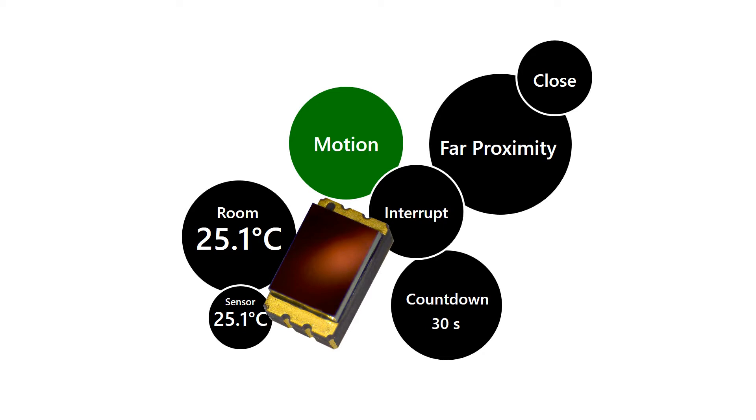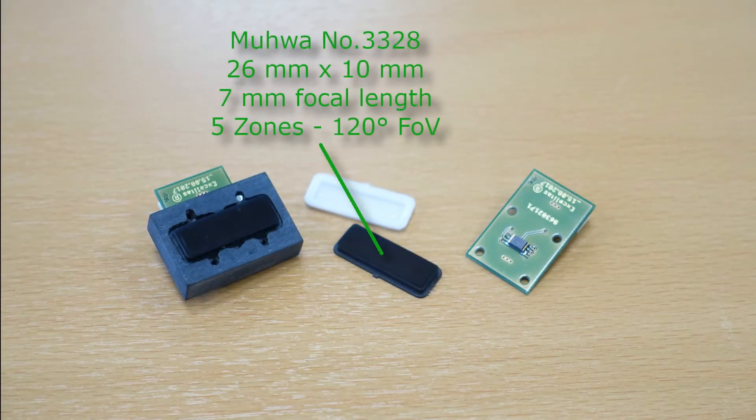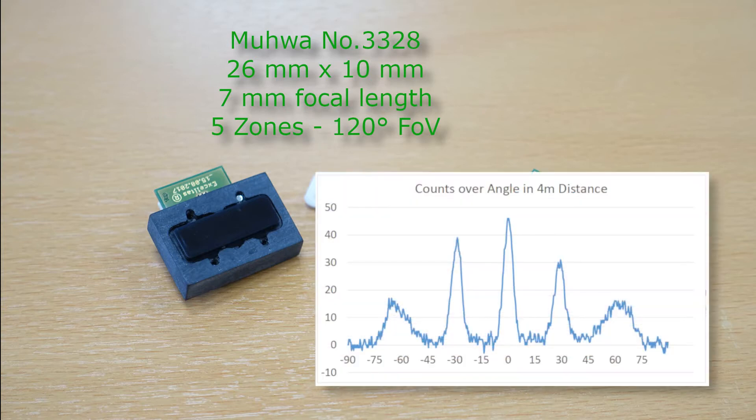It relies on a rapid signal change which is generated by moving warm objects seen through a multi-segment Fresnel lens. The lens here is a very compact flat lens with a focal length of only 7 mm. It features 5 zones with an angle of 30 degrees in between those. The total field of view is 120 degrees.